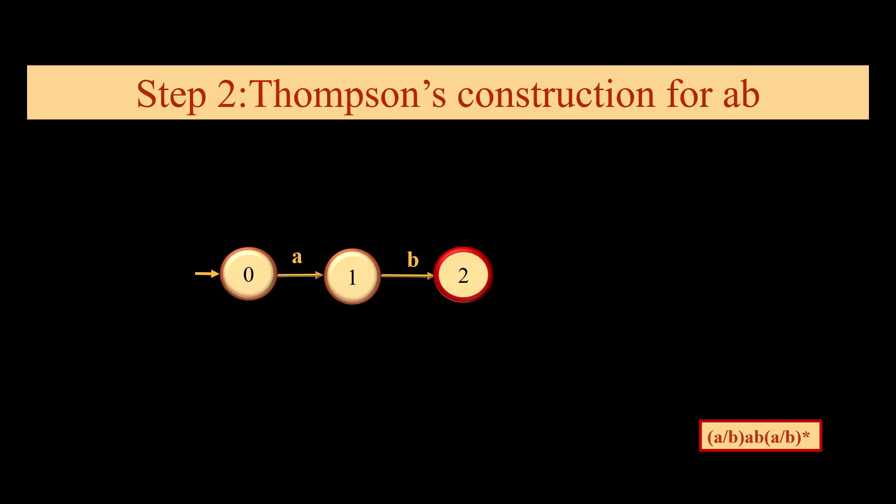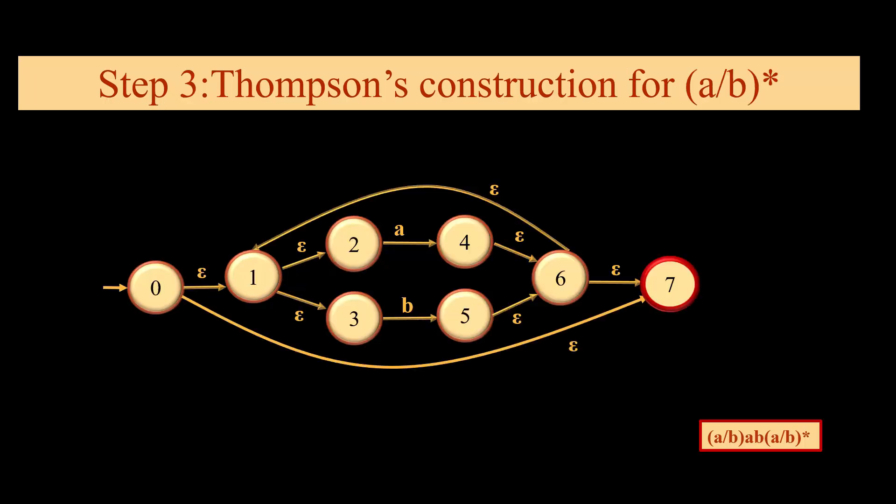Then we have ab. This is in concatenation, so no epsilon is required. And then we come to (a or b) whole star: 4 epsilons of (a or b), 4 epsilons of (a or b) whole star, so that means 8 epsilons in all.